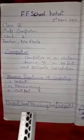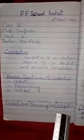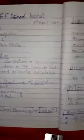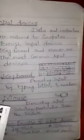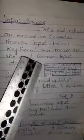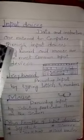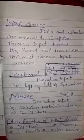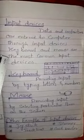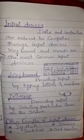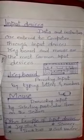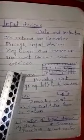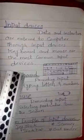The first one is the input device. Data and instructions are entered into the computer by input devices. The most common input devices are keyboard and mouse, which you are familiar with.